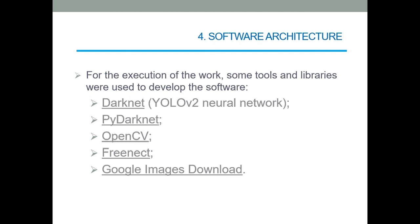FreeNet is a library that allowed to use the Microsoft Kinect sensor information in some programming language scripts, including Python language. Google image download was used in the preparation of the training database. It helped on getting the necessary images from the Internet.